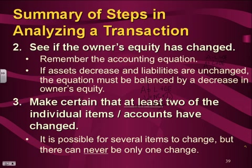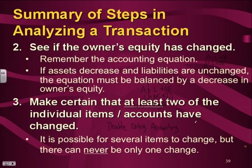Make certain that at least two of the individual items — accounts — have changed. Remember, this is called double entry accounting. That is the type of accounting we do. It is possible for several items to change, but there can never be only one. Always two or more. Never one. If you are only changing one account, you're not completing the entire transaction.